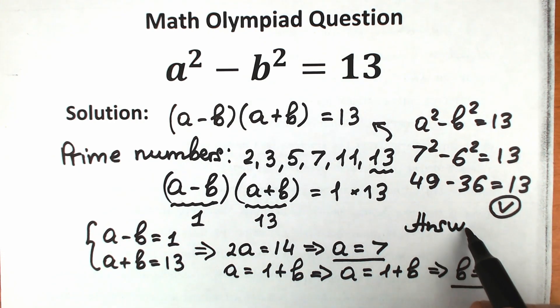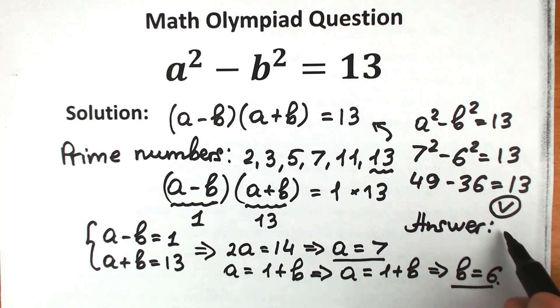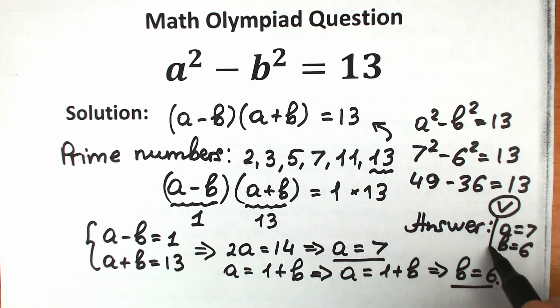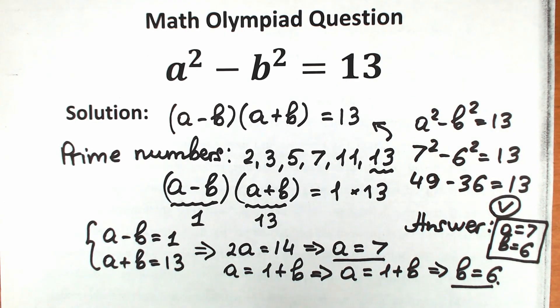So our answer: a equals 7 and b equals 6. So this is our answer to this really interesting challenge. If you still have any questions, write your question into the comment section. It will be really interesting to read about it. And also, if this video is helpful in any way, don't forget to like and subscribe. Thank you for your time and see you in the next videos.